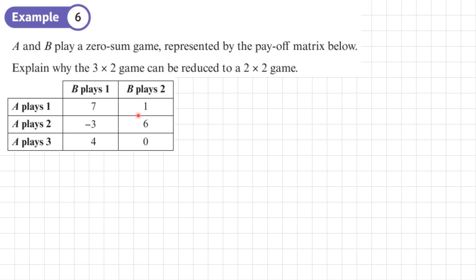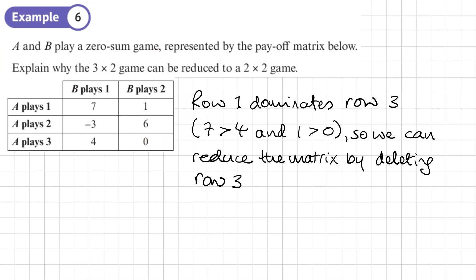And I can see that row 1 dominates row 3 since the 7 is bigger than the 4 and the 1 is bigger than the 0. Now we need to put that in words. So row 1 dominates row 3. And that's because 7 is bigger than 4, 1 is bigger than 0. So we can reduce the matrix by deleting row 3.